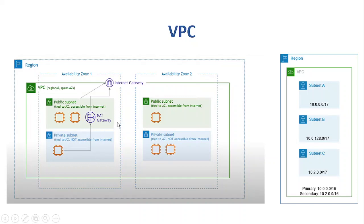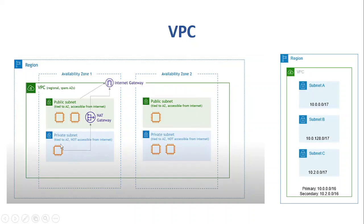The next concept is the NAT gateway. A NAT gateway is used when a resource in a private subnet wants to access the internet — that can be done through the NAT gateway. The private subnet connects with the NAT gateway, and the NAT gateway connects with the internet, acting as an intermediary. It replaces the private IP address with its own public IP address before forwarding traffic to the internet. The communication is one-way — for example, for software upgrades — and nobody can reach in from the internet to the private network.